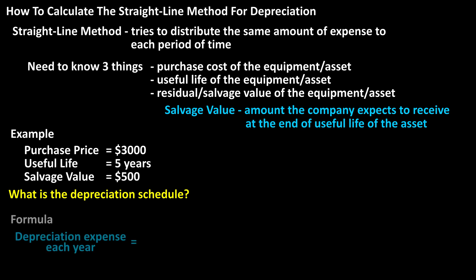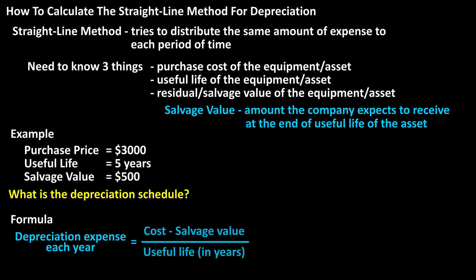The formula for depreciation expense for the straight-line method is: depreciation expense each year equals the cost minus the residual or salvage value, divided by the useful life in years. In our example, plugging into the formula, we have $3,000 minus $500.